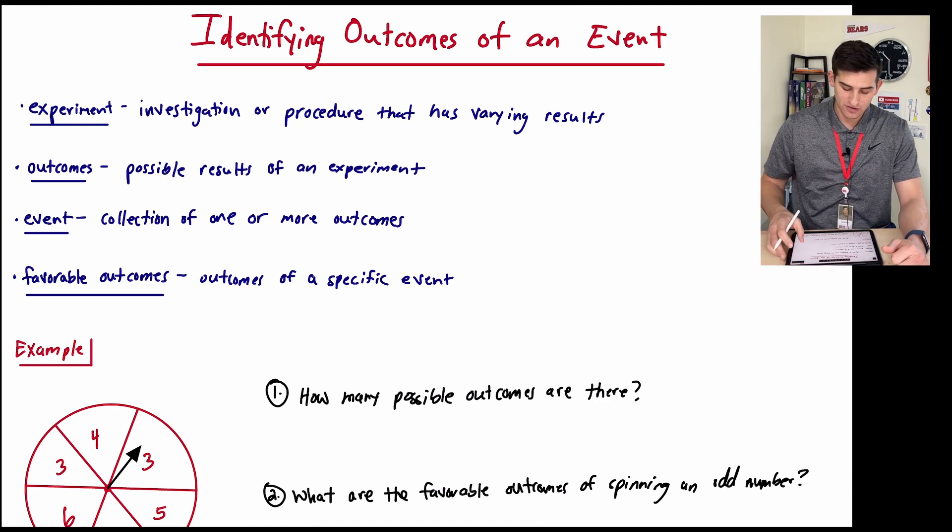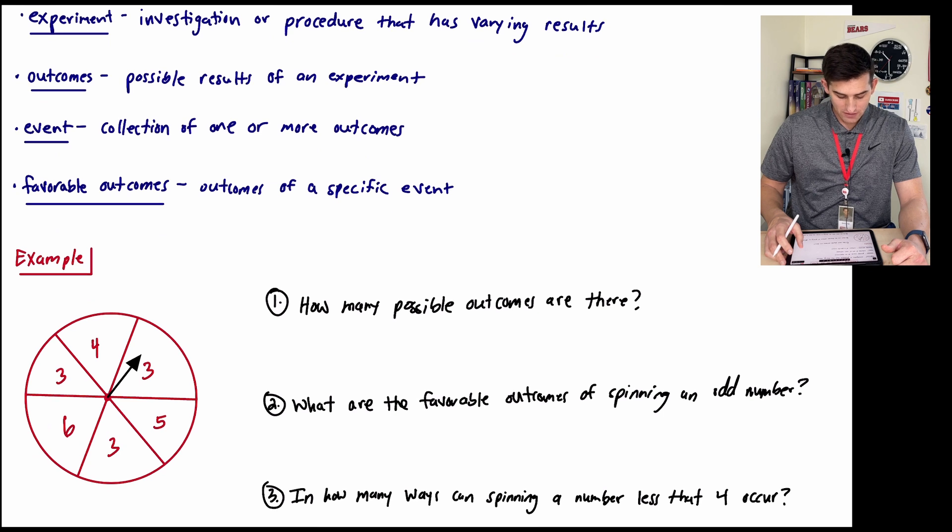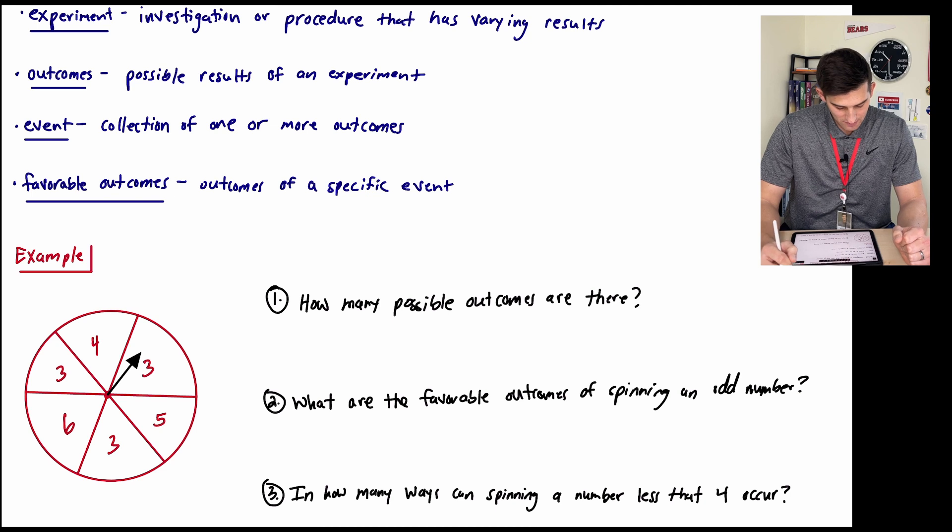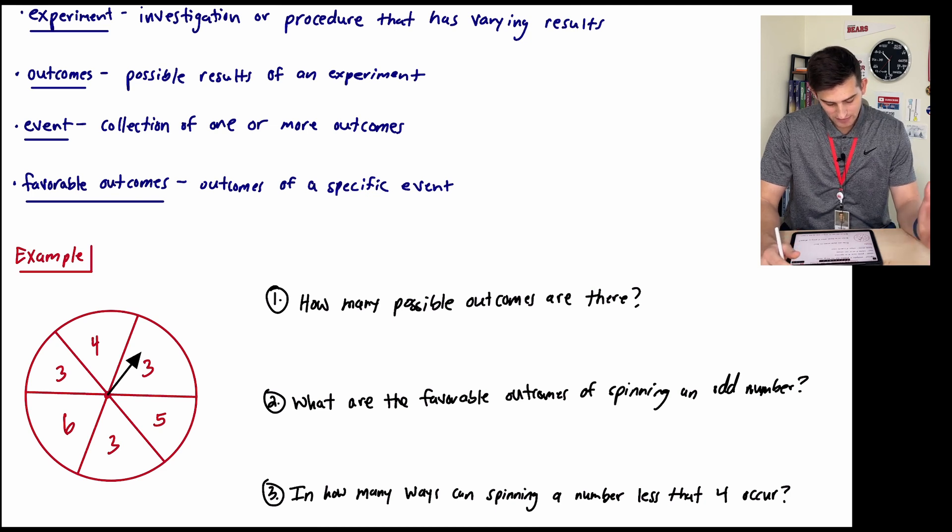So now let's apply these definitions to our example here. So we have a spinner on the left that's separated into six sections, and then we see we have six numbers in here. So we have 3, 4, 3, 5, 3, and 6.